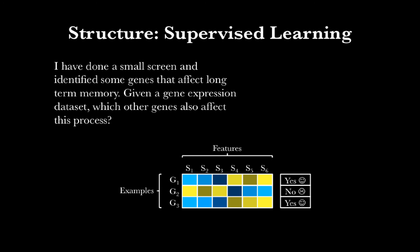We know that gene 1 is associated with long-term memory. We can also describe gene 1 by saying it has low expression in sample 1, low expression in sample 2, low expression in sample 3, high expression in sample 4, high expression in sample 5, and high expression in sample 6. So these are the features of the gene — the items that really describe that gene. And at the end we have whether or not the gene was associated with long-term memory, and these we call labels.